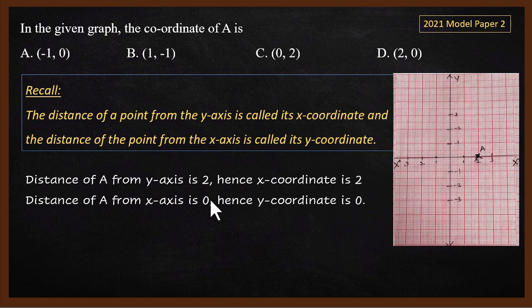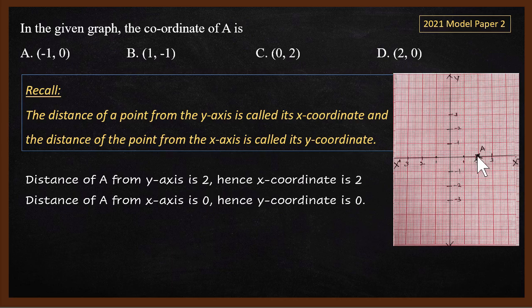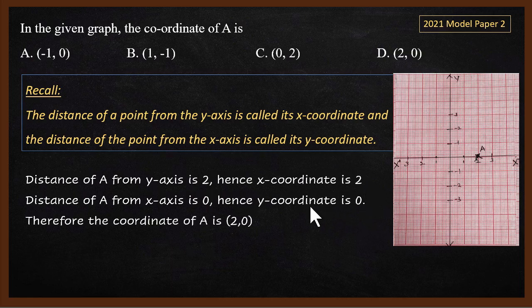The distance from the x-axis is 0, so the y-coordinate is 0. The point is 2 units from the y-axis, making the x-coordinate 2. The y-coordinate is 0. The answer is (2, 0), which is answer D.